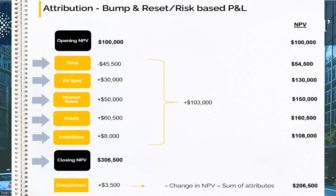The second method is called the bump and reset method. With the waterfall method, we updated pricing inputs one after the other, resulting in a cumulative NPV. With bump and reset, we bump a pricing input, then reset it, then bump the next pricing input, then reset it, and so on. So we take the P&L scores individually. When you add up all those P&L scores, they may not agree to the closing NPV — this is particularly the case for portfolios with optionality, such as those with gamma or volga, which are second-order derivatives. Where this is the case, you need to have your system capture the P&L impact from those gamma impacts.